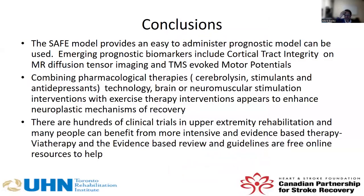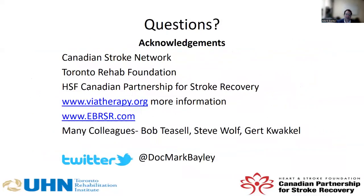In conclusion, the SAFE model provides an easy-to-administer prognostic model which can be used to predict who is going to have good arm function. There are emerging prognostic biomarkers including cortical tract integrity on MR diffusion tensor imaging and transcranial magnetic stimulation-evoked potentials which can be used to predict who will do better. There is evidence that combining pharmacological therapies such as cerebrolysin and stimulants with technology and electrical stimulation with exercise therapy appears to enhance neuroplastic recovery. There are hundreds of clinical trials, and many people can benefit from a more intensive and evidence-based therapy. VIA Therapy and the Evidence-Based Review are guidelines you can use. Thank you very much for listening.